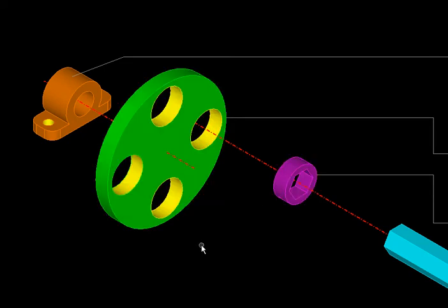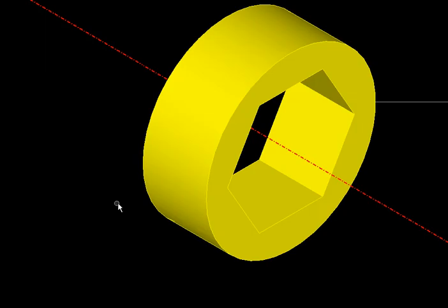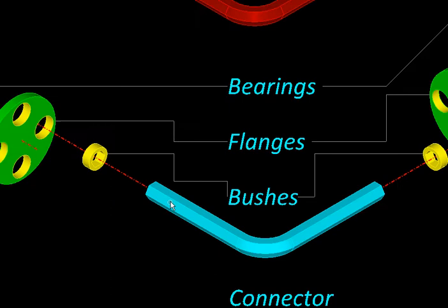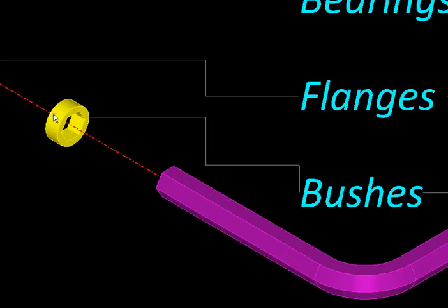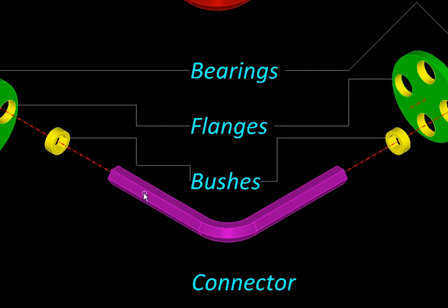There will be bushes placed. Each bush will have a prismatic cavity like this, in which there will be a prismatic rod inserted so it will be free to slide in and out of this bush. Then this rod bends.